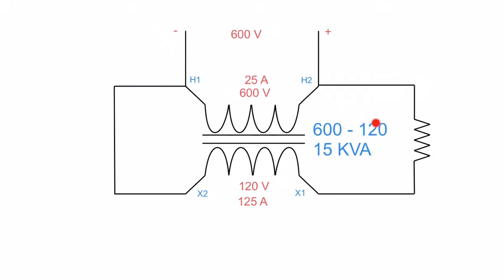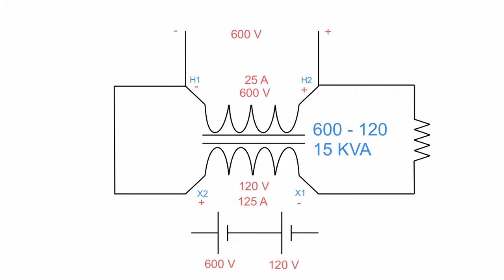In this next example, we have the same transformer but with a key difference: instead of X1 being on the connection side, we now have X2 and X1 swapped. All ratings stay the same. The polarity is still negative-positive on the primary, and since H1 is negative, X1 must be negative and X2 must be positive. Now going positive to negative 600 volts, then positive to negative 120 volts — like two batteries in series — gives us 600 plus 120, which is 720 volts at the load.